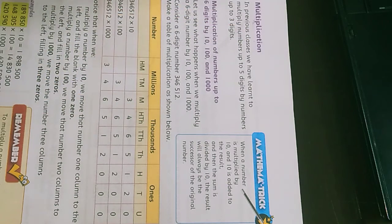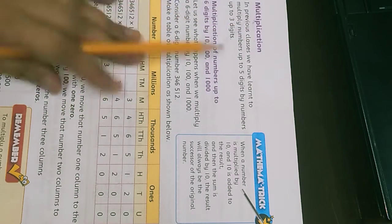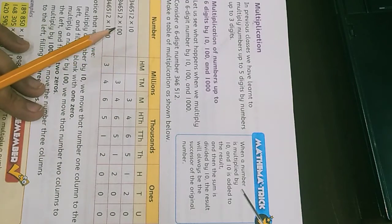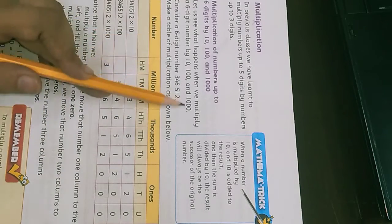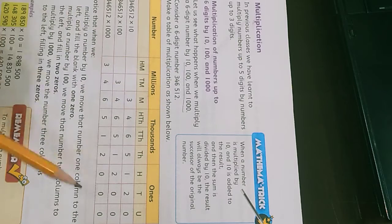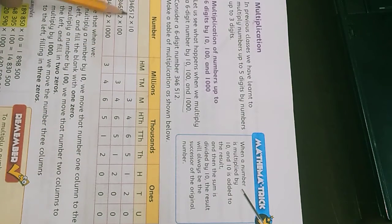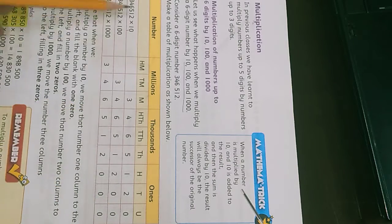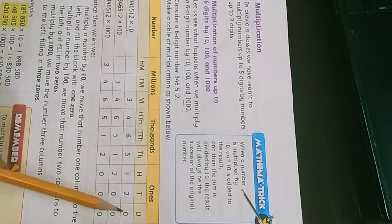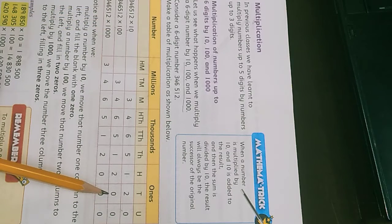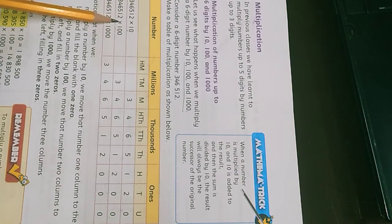We have done multiplication in previous classes. We will start with 10, 100, and 1000. We will see how we multiply with 10 — when we multiply with 10, we add one zero at the end of the value. When we multiply with 100, we add two zeros at the end of the value.